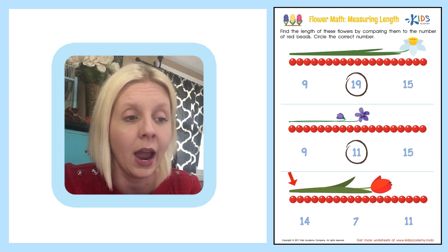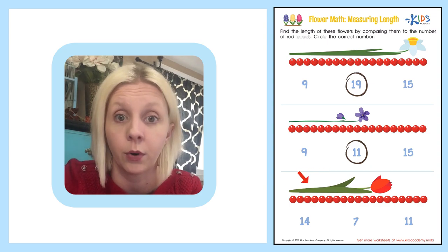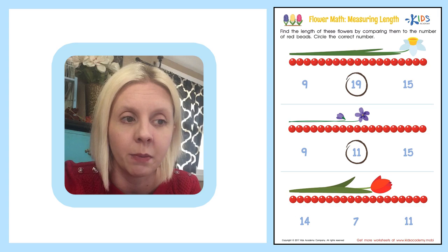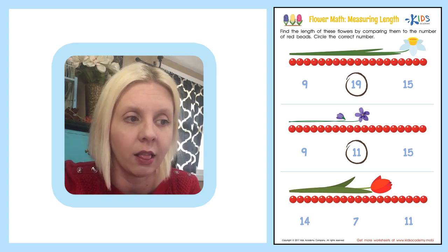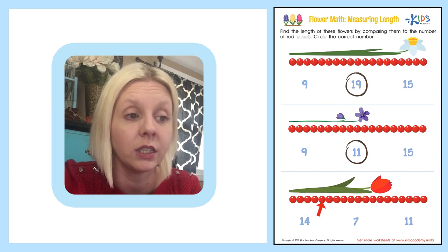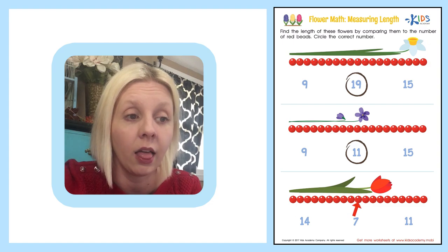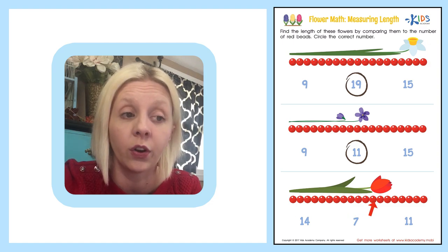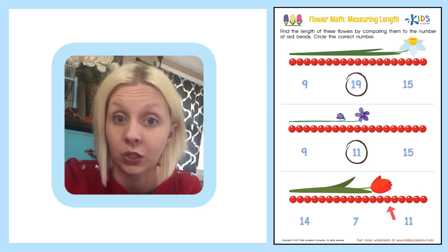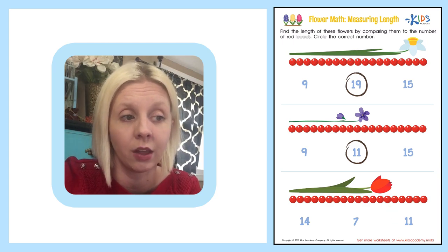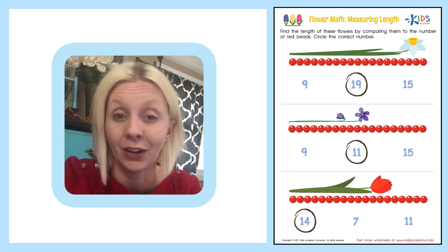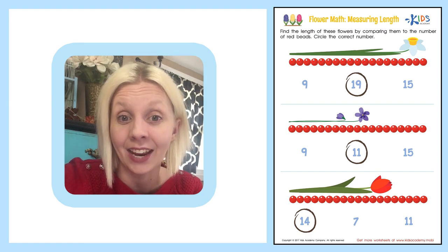Our last flower here looks like a pretty red tulip. We're going to measure and see its length: 1, 2, 3, 4, 5, 6, 7, 8, 9, 10, 11, 12, 13, 14. So it is 14 red beads long — we're going to circle the number 14. Great job today! See you later, bye!